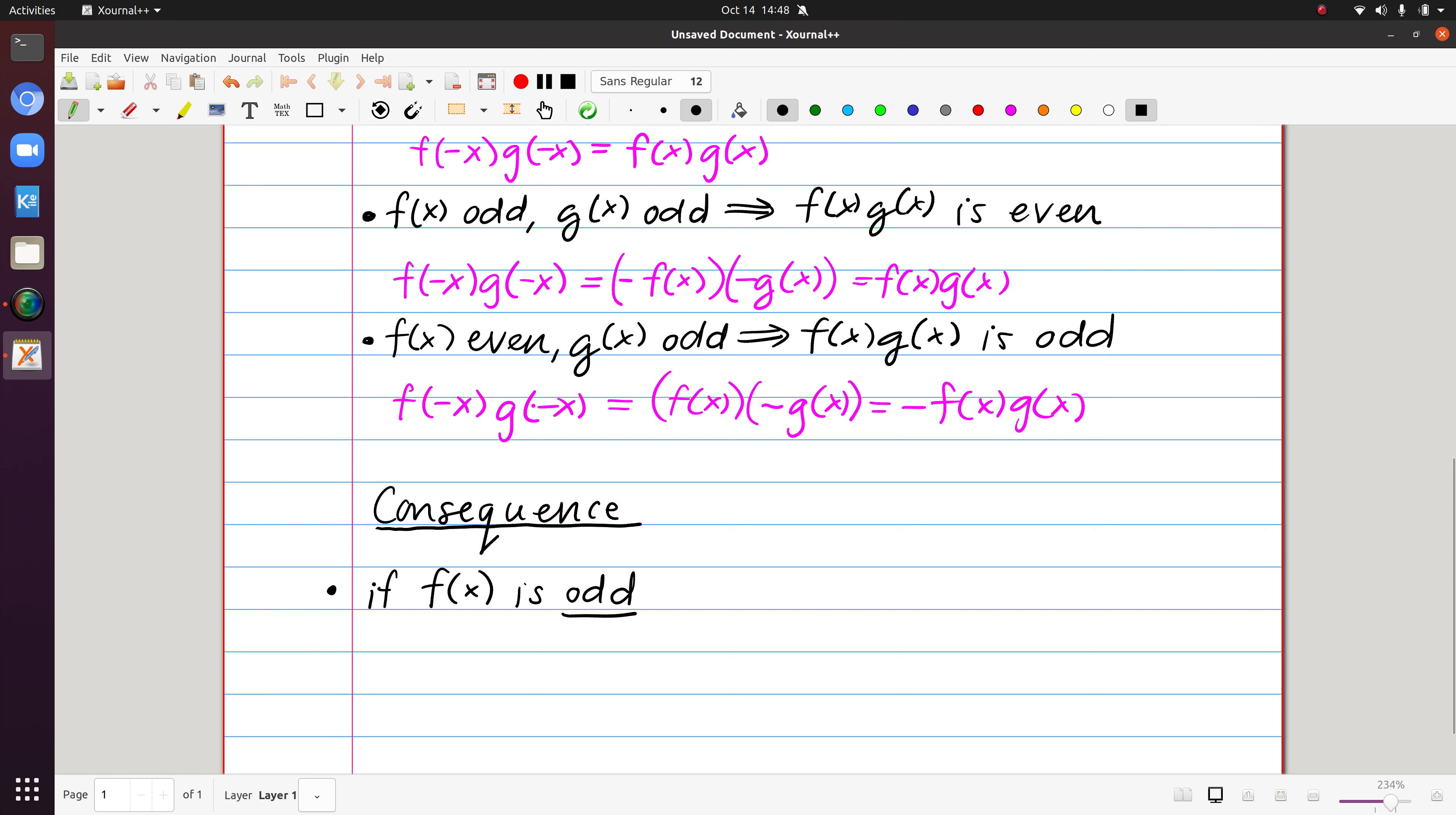and we are finding its Fourier series, what we can immediately assume is that a sub 0 is 0 and the a sub k's are 0 for all k.